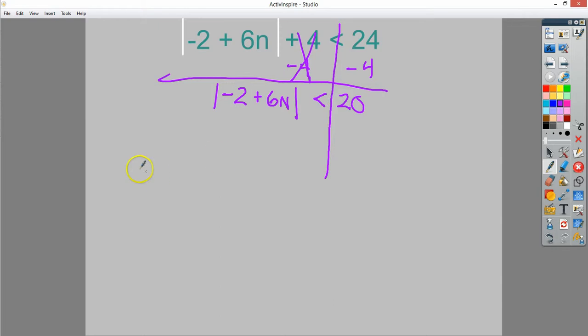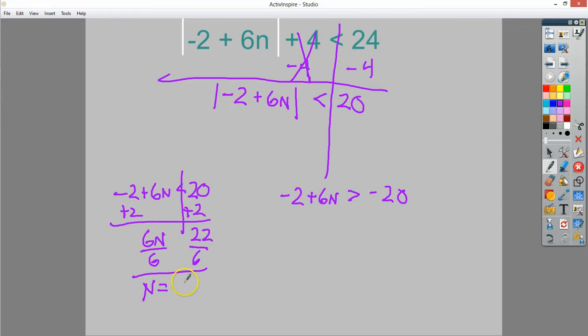Now I can split it into two problems. So I would do the negative two plus six n is less than 20, and negative two plus six n is greater than negative 20. And you can just solve these out the way that you would normally do it. So you end up with six n is less than 22 here. So n is less than three and two-thirds.